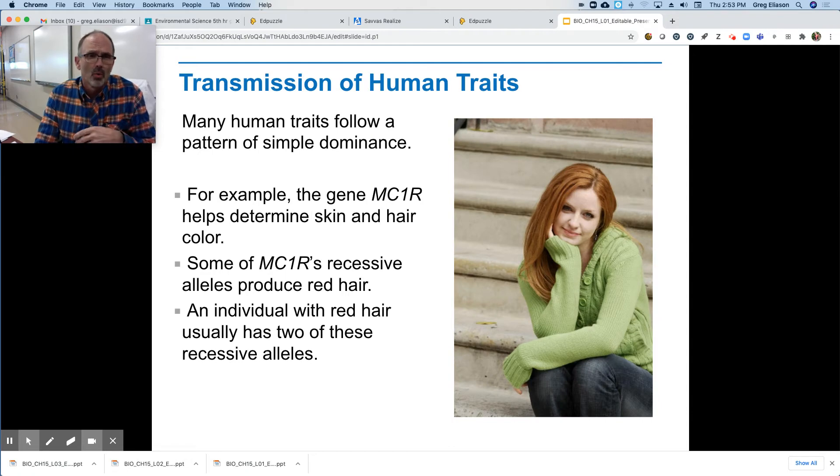So one of the more simpler ways we see human traits is a simple dominant-recessive relationship. So there's a gene called the MC1R gene, and that helps determine skin and hair color. And if you have a recessive MC1R gene, those alleles, if you have two of them, they'll produce red hair, typically pale skin.